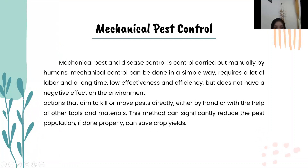Mechanical pest and disease control is control carried out manually by humans. Mechanical control can be done in a simple way, but requires a lot of labor and a long time. It has low effectiveness and efficiency but doesn't have a negative effect on the environment. Actions aim to kill or move pests directly, either by hand or with the help of other tools and materials. This method can significantly reduce the pest population and, if done properly, can save crop yields.